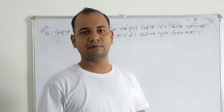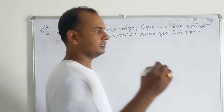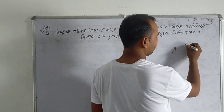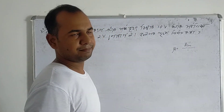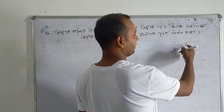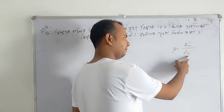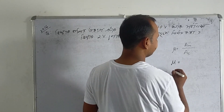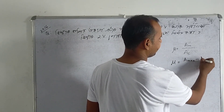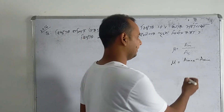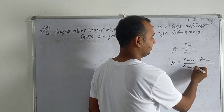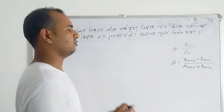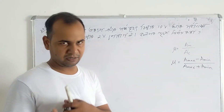So the modulation index formula will be: mu is equal to A_m divided by A_c — that is, amplitude of the message signal divided by amplitude of the carrier signal. Now I would also give another formula: mu is equal to A_maximum minus A_minimum divided by A_maximum plus A_minimum. That is the formula for modulation index.